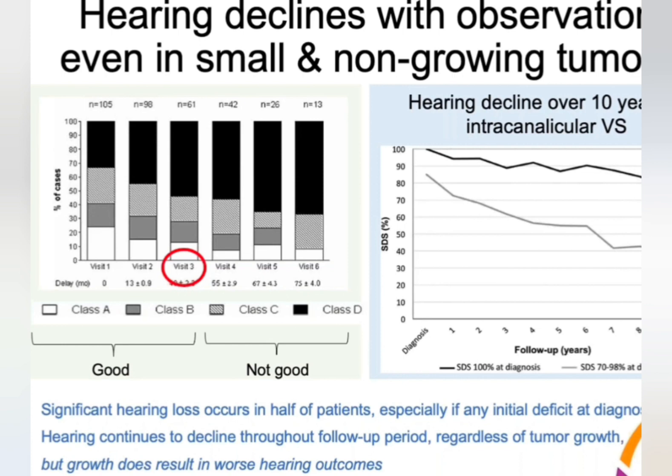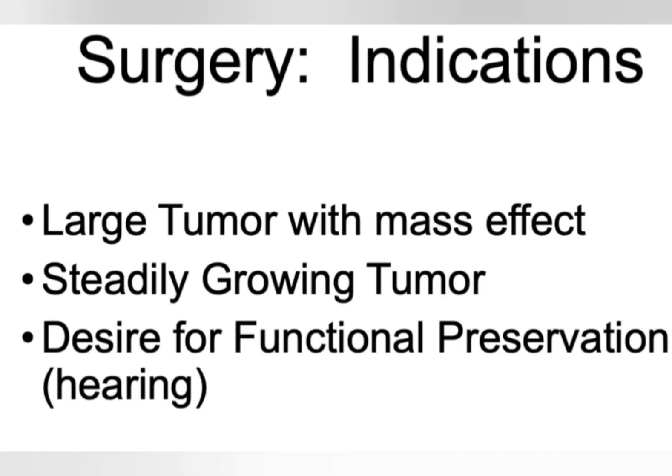However, if detected in an elderly patient, observation can be done. In younger patients, there is a risk of hearing deterioration whether the tumour grows fast or not, so surgery would be an option. You operate when there is a large tumour causing mass effect, raised intracranial pressure, or brainstem compression. Also operate if the tumour is steadily growing on serial MRI or there is a desire for functional hearing preservation.